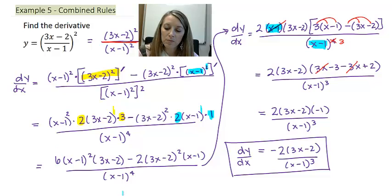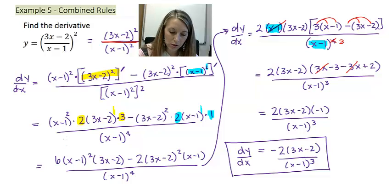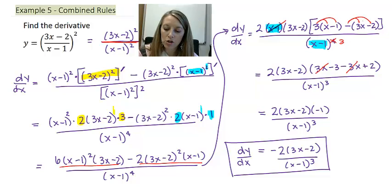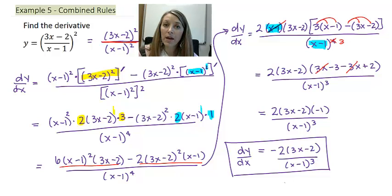I rewrote things in a better order. Then I factored out the common factors between the two terms. In my brackets, I distributed, and then I canceled out an (x minus 1), leaving three of them in the denominator. Simplifying my brackets gives me negative 1, which leads to the final answer: negative 2 times (3x minus 2) all over (x minus 1) to the third — the exact same answer we got when we did it the other way, chain rule first then quotient rule.